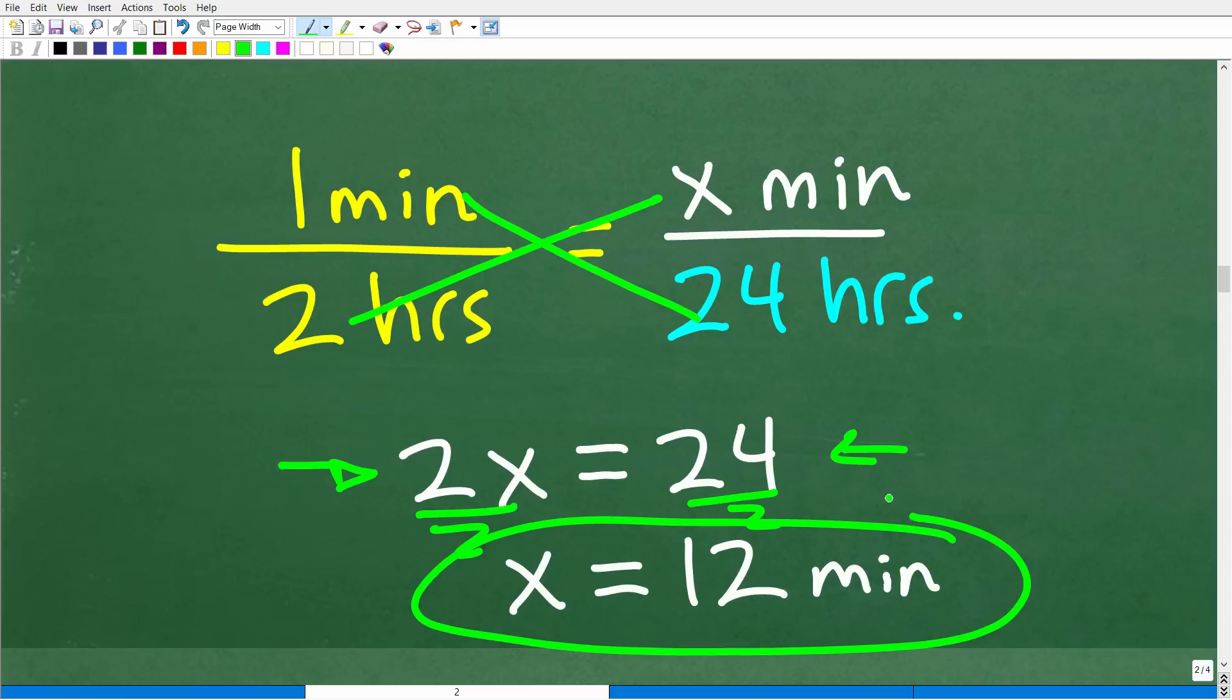I just showed you two ways we can determine how many minutes this clock is going to lose in one day. Now that we have this information, it's going to be very easy to solve the problem.